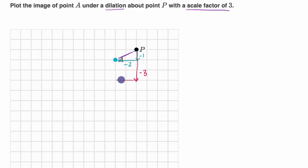So negative one, negative two, negative three, negative four, negative five, negative six. So you will end up right over there.